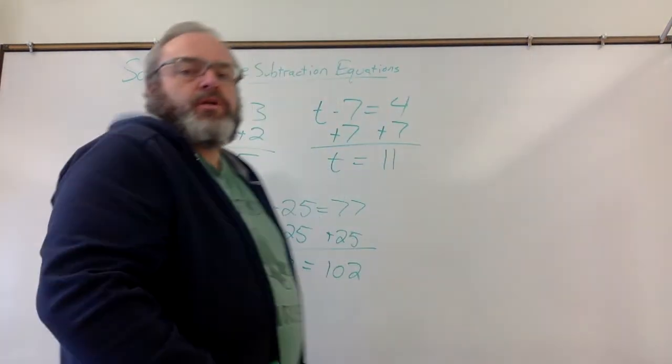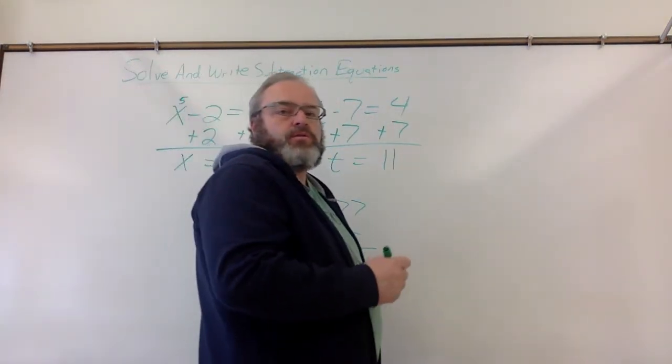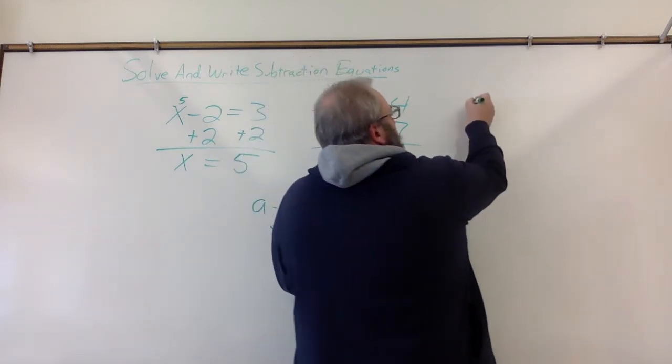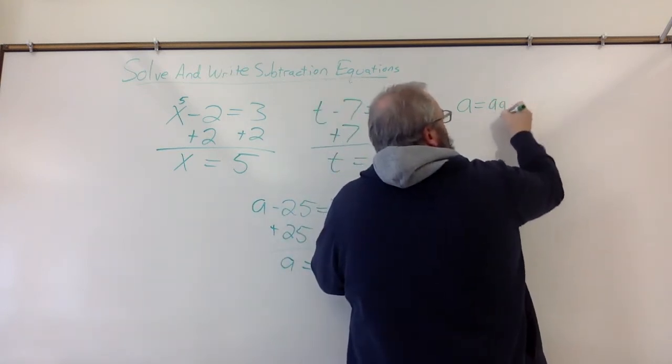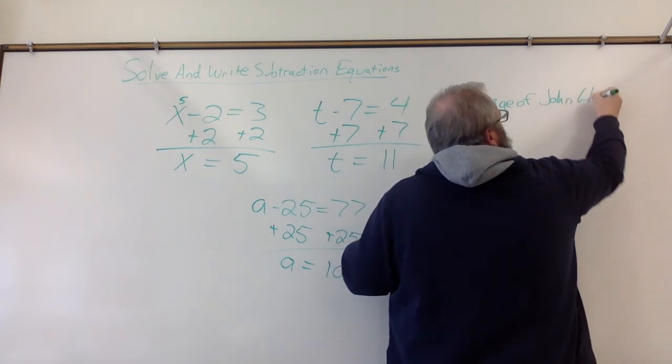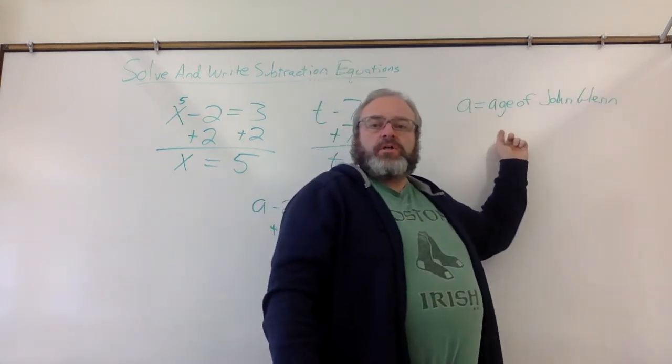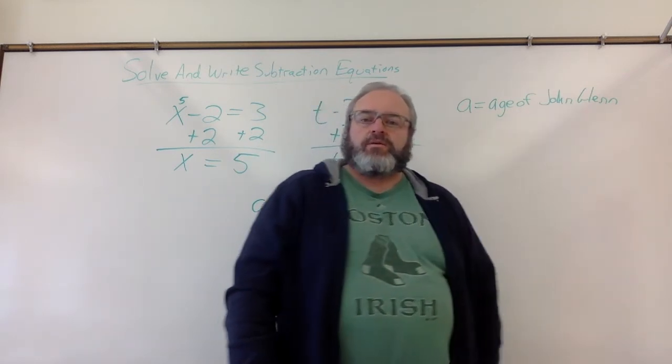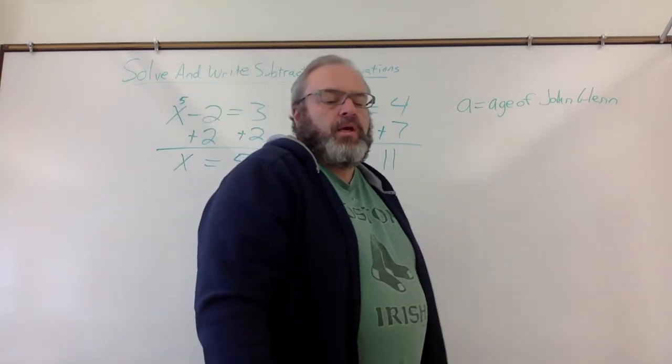Okay, so we want to know how old John Glenn was. So, we're going to pick a variable to stand for John Glenn's age. I'm going to pick a for age of John Glenn. A for age. Again, you can pick any variable you want. I might have picked a J for John, a G for Glenn, or maybe just an X. That's entirely up to you.